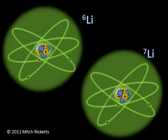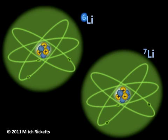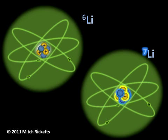Both of these atoms belong to the element lithium because they each have three protons. The differing number of neutrons means they are simply different isotopes of the same element. The isotope number is the number of protons plus the number of neutrons. Lithium-6 has three neutrons plus three protons which equals six. Lithium-7 has four neutrons plus three protons which equals seven.